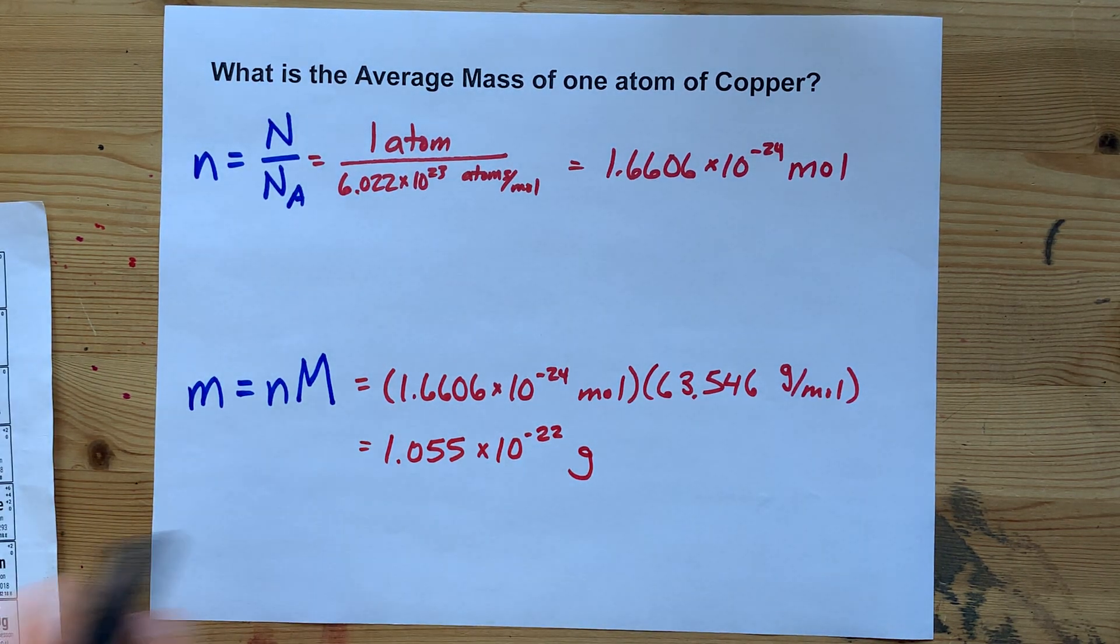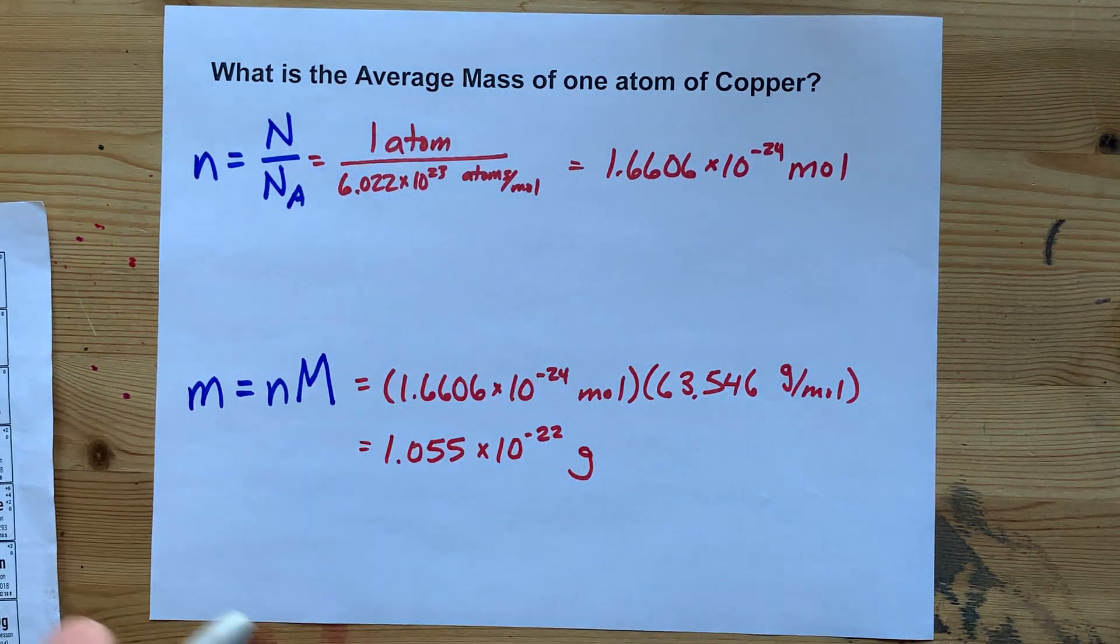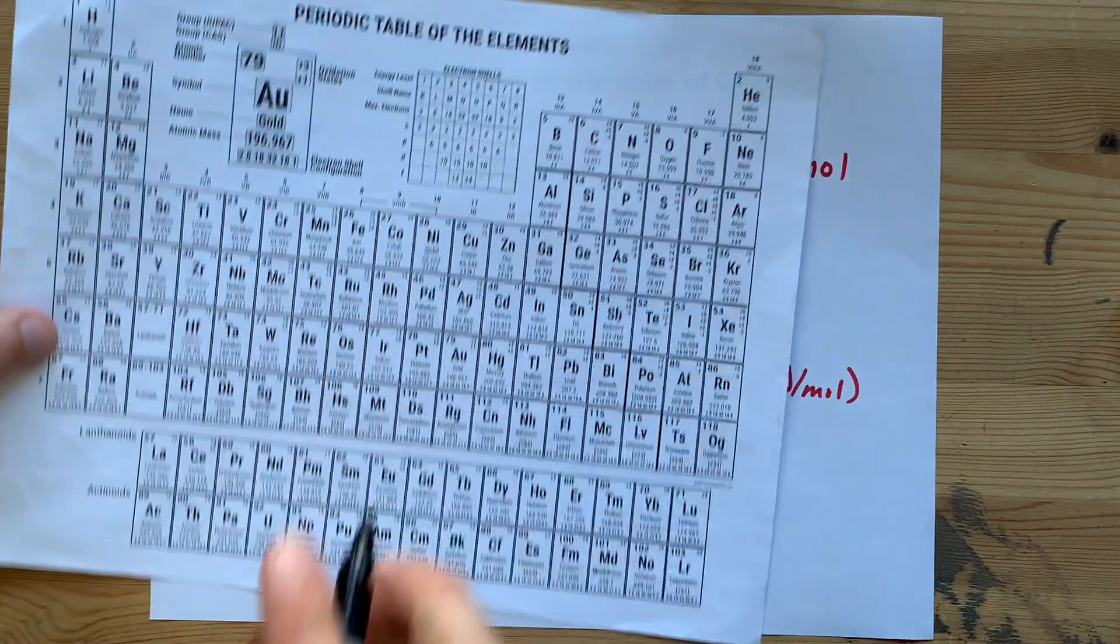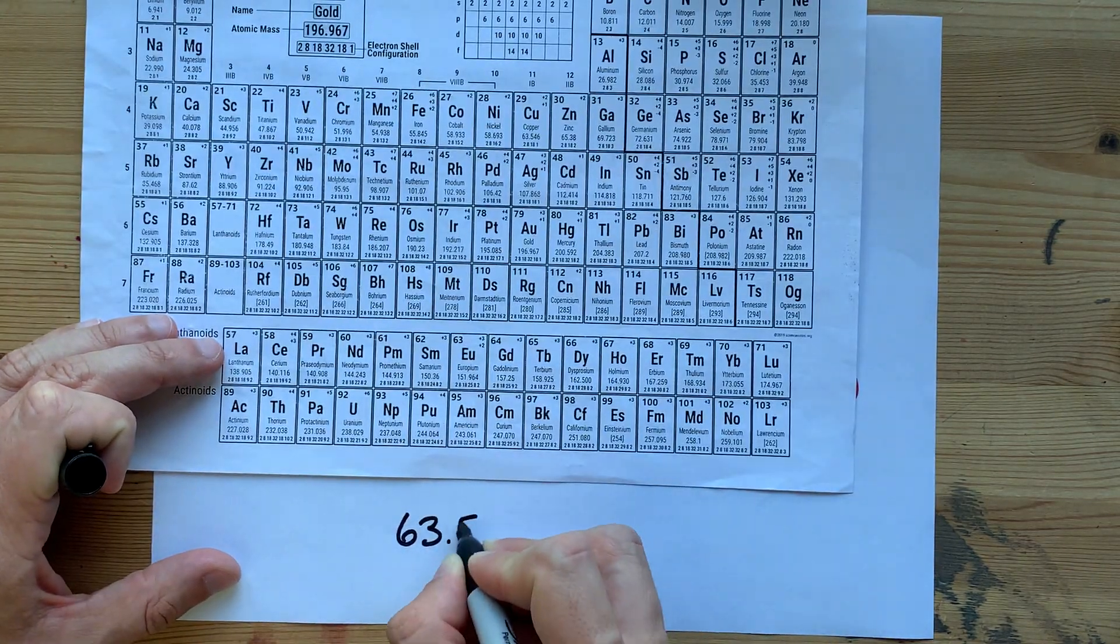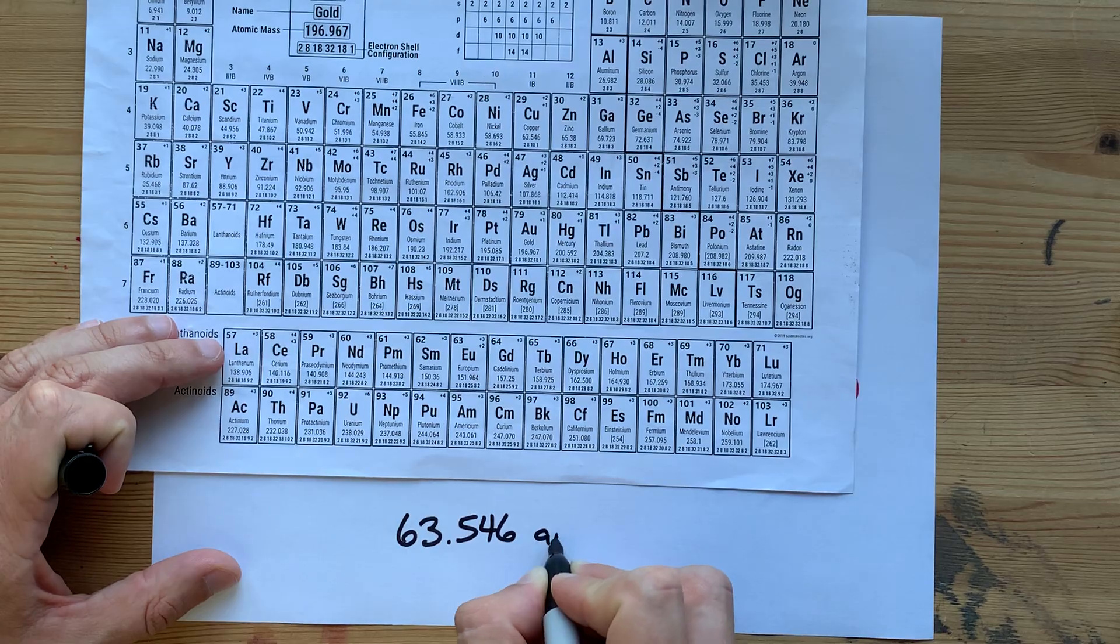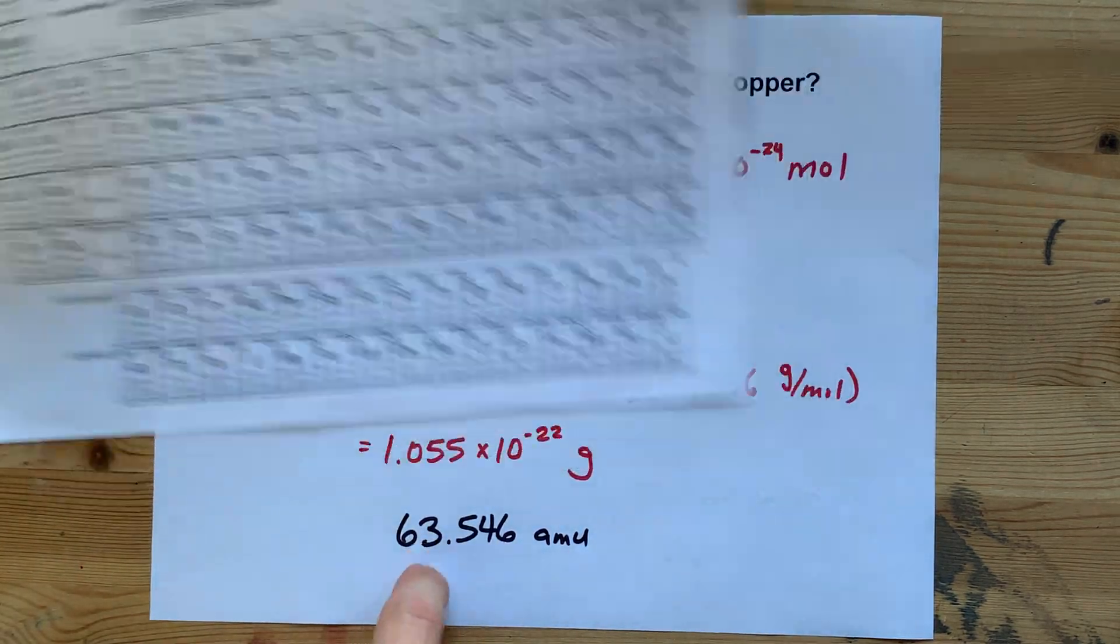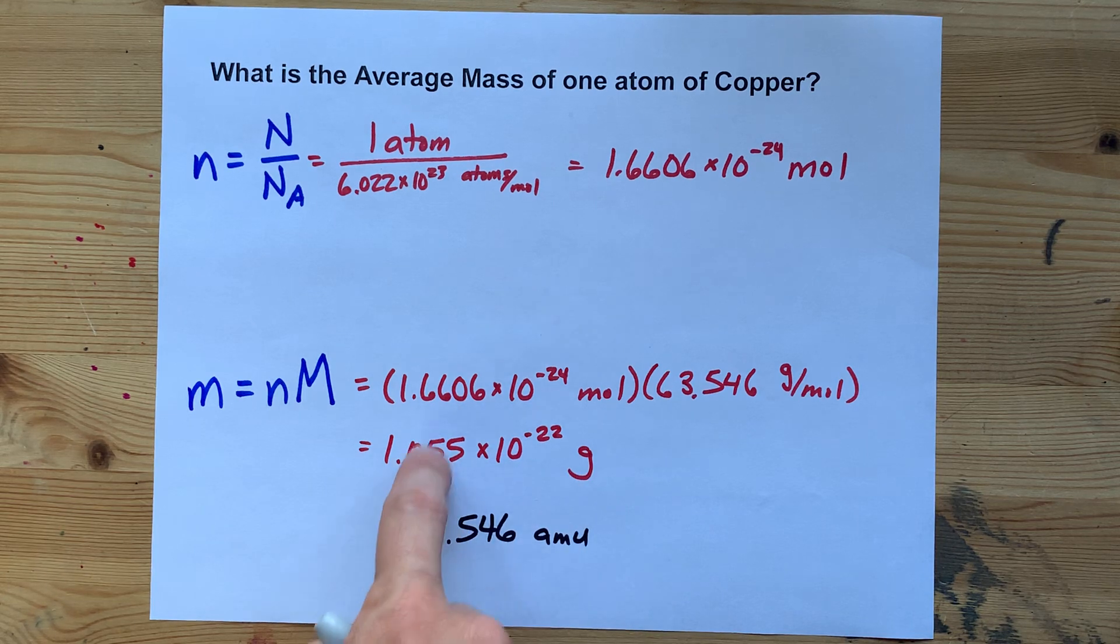Now, if you're feeling cheeky and your teacher doesn't ask you for the mass in grams, just mass, you are allowed to simply say 63.546 AMU. Atomic mass units is a totally valid way to express mass. These are equivalent.